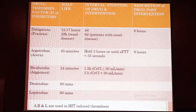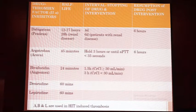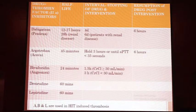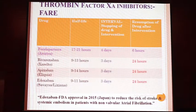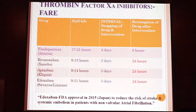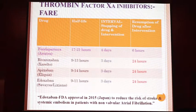Dabigatran has a half-life of 12 to 17 hours; stop for 4 days if no renal disease or 6 days if there is renal disease; resume 6 hours after the procedure. Argatroban has a half-life of 45 minutes; hold for at least 3 hours before the procedure; resume after 6 hours. Bivalirudin has a half-life of 24 hours; hold for 1.5 hours if creatinine clearance >30 or 3 hours if clearance <30. Fondaparinux is a direct factor Xa inhibitor with a half-life of 17 to 21 hours; stop 4 days before the procedure; resume 6 hours after. Rivaroxaban, apixaban, and edoxaban have a half-life of about 9+ hours; stop 3 days before the procedure; resume 24 hours after.